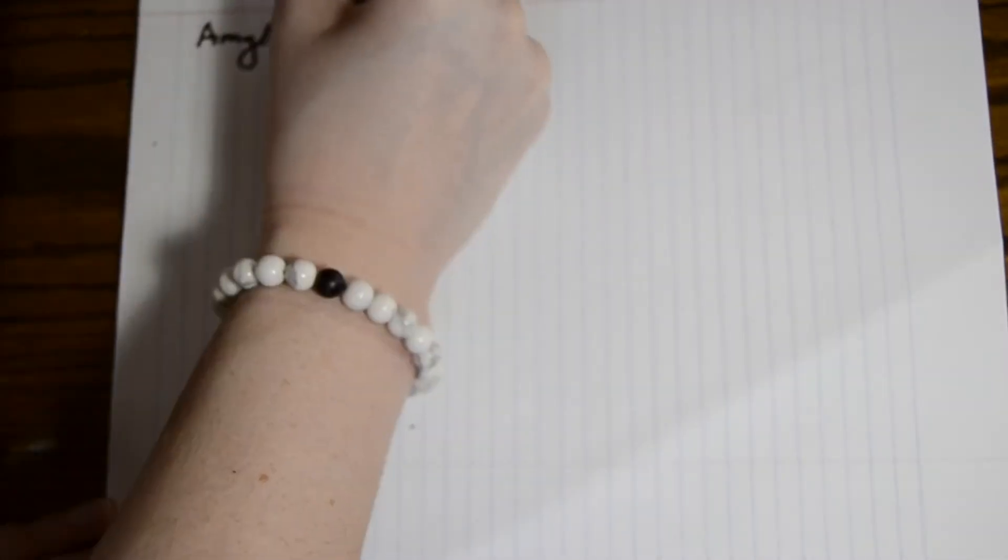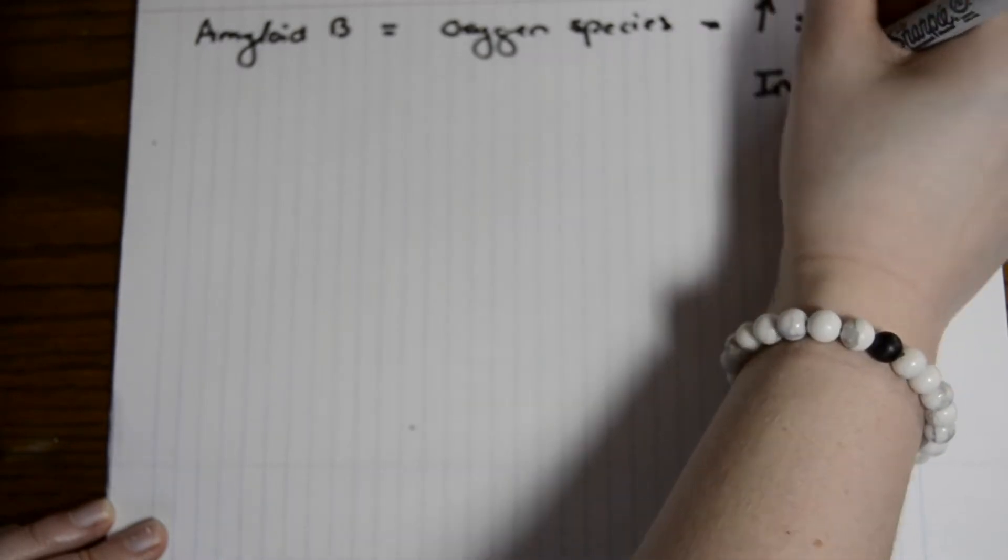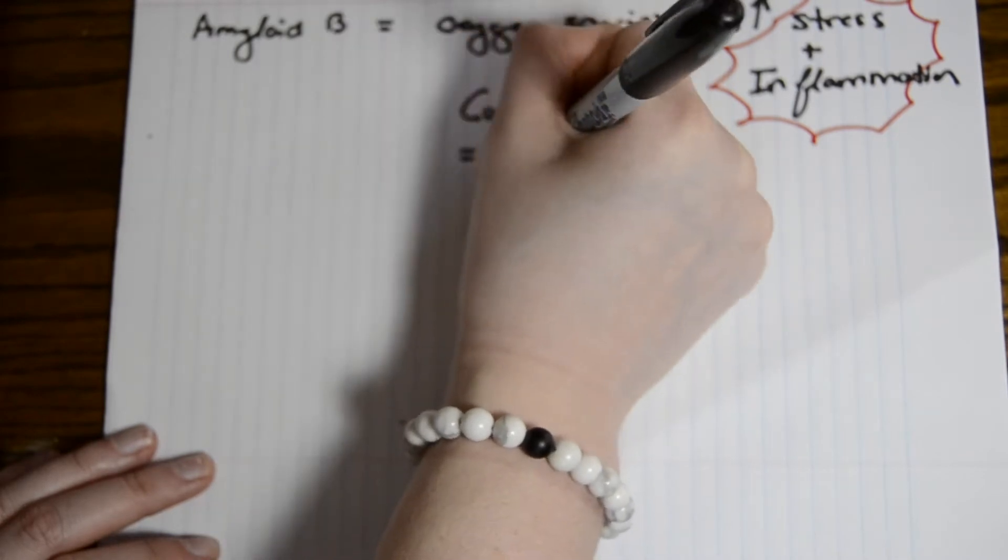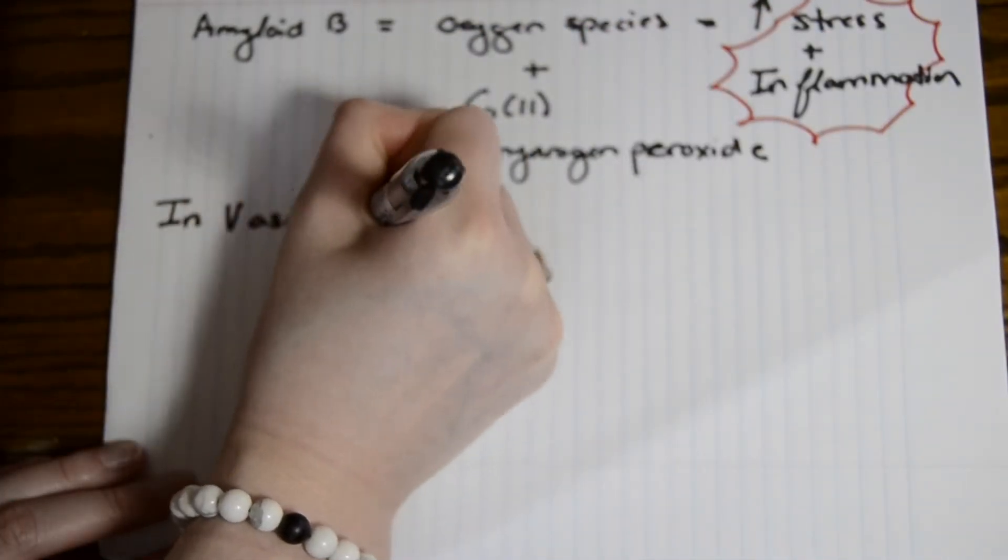Now let's go into what amyloid beta does to cause specific neuronal death. This causes oxidant species, which is an increase in stress and inflammation. When this combines with copper, it causes an increase in hydrogen peroxide, which causes neuronal death.